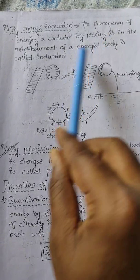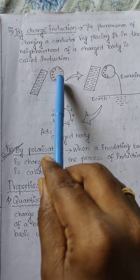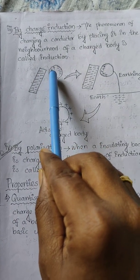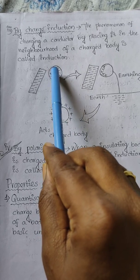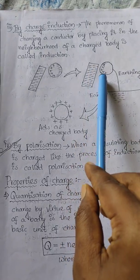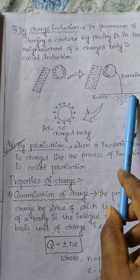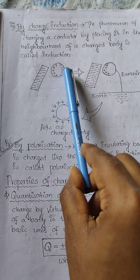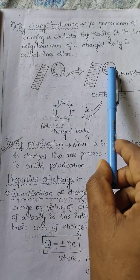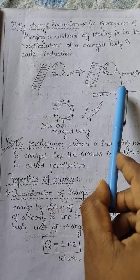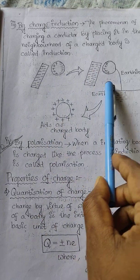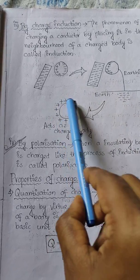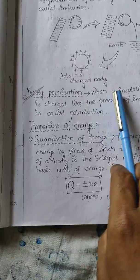Charging by induction: if a charged body is brought near a conductor, the charges are of the same type. If the charge is negative and it's a good conductor of electricity, electrons will move to the far end and the near end becomes positive. When electrons are in excess, neutralization occurs. When the body is removed, the charge remains.